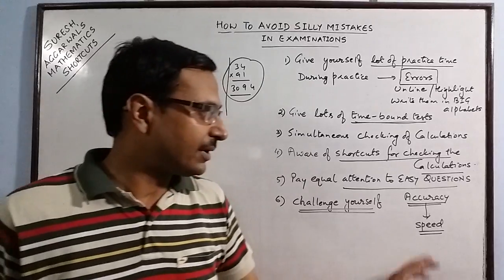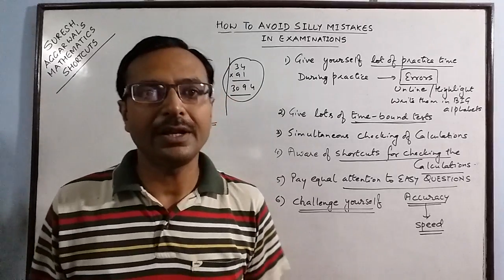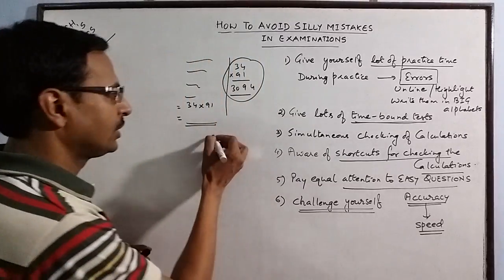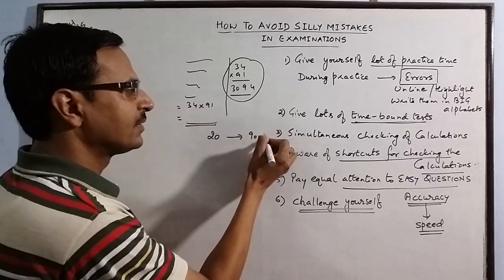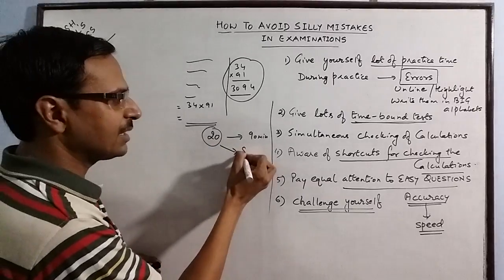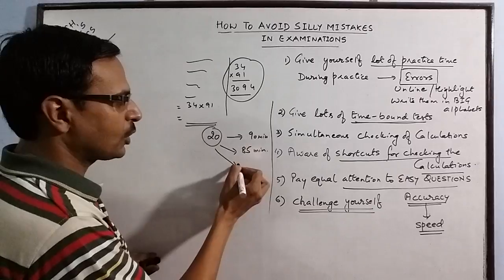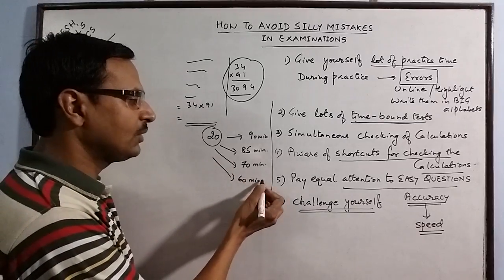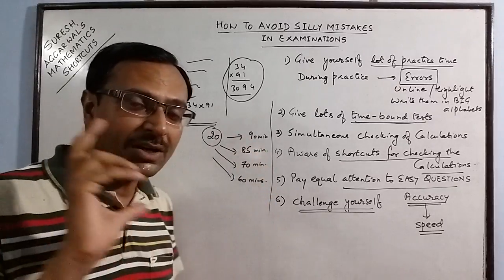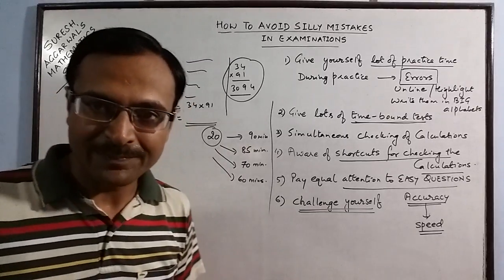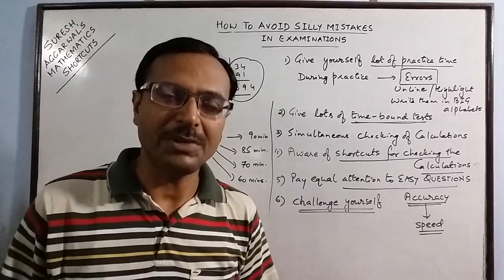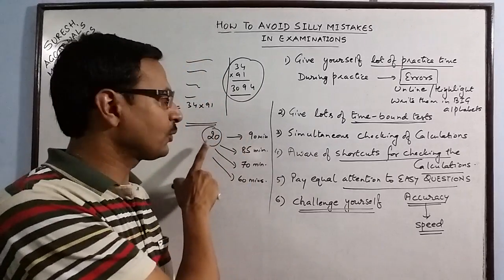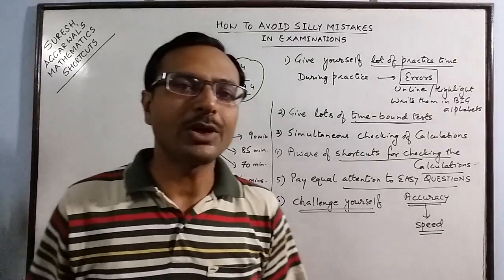It is a law of nature that whenever there is speed in doing a work, the number of errors which is committed tends to increase. So challenge yourself—if you are able to solve 20 questions in 90 minutes, then try solving all these 20 questions next time in 85 minutes. In the process give yourself a challenge of solving these in 70 minutes, 60 minutes, and so on. And you will realize that whenever the time constraint is there on our mind, we tend to commit more errors. So before actually appearing in any kind of examination, you have to challenge yourself enough times so that you have that habit of completing a given number of questions in less time and that too without committing many errors.